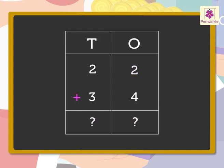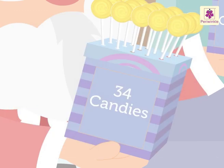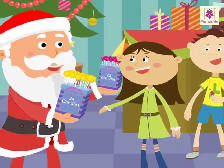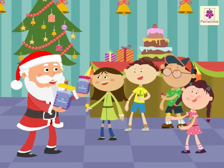2 plus 4 is equal to 6. 2 plus 3 is equal to 5. Thus, the sum of 22 and 34 is 56. There are 56 yummy candies with Santa.